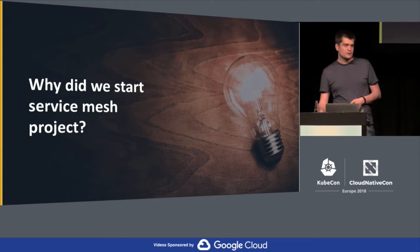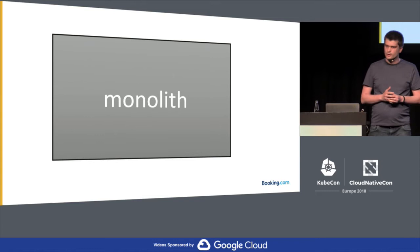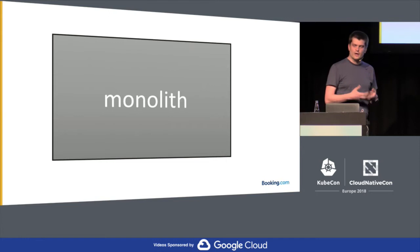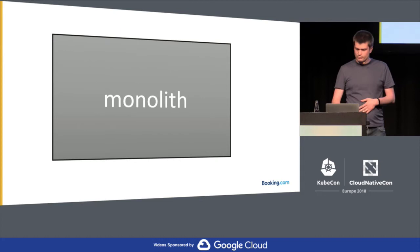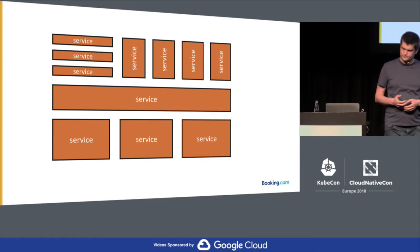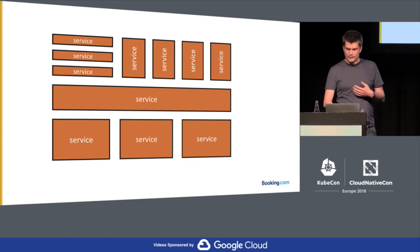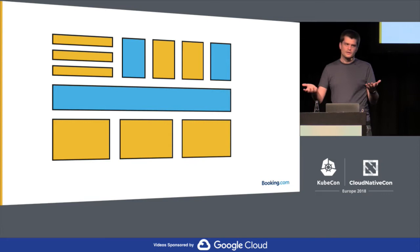Why did we actually start this service mesh project? To answer that, I need to give you a little bit of history inside Booking.com. Booking.com has traditionally been a big, gigantic monolith written in Perl. We have quite a lot of code sitting there. What we're currently doing is splitting this big monolith into multiple services — moving toward service-oriented architecture. We imagined this would be done in two technological stacks: Perl and Java.